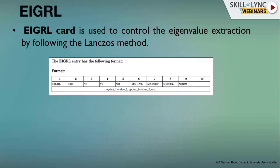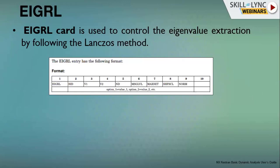The EIGRL card is used to extract eigenvalues using the Lanczos method. Other methods like the Givens method and inverse method exist, but Lanczos is faster and more accurate for large models. A key rule of thumb: if evaluating a vehicle up to 200 Hz, the EIGRL card should extract eigenvalues up to twice that frequency — i.e., 400 Hz. The card accepts parameters such as ID, initial frequency, final frequency, and number of modes.